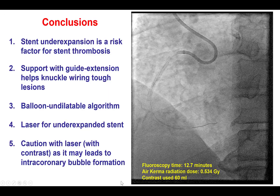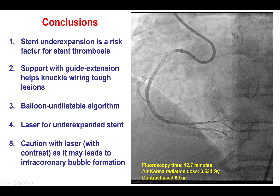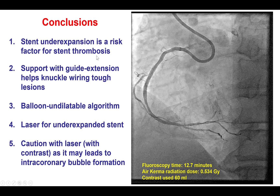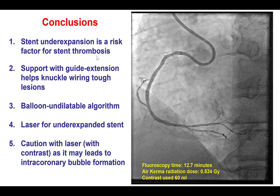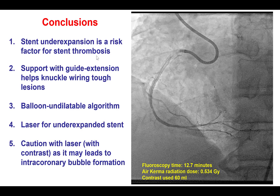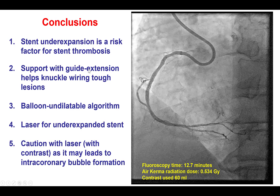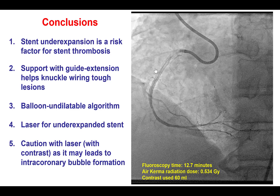Several lessons from this case. First, stent under-expansion is a major risk factor for stent thrombosis and should not be left alone. In patients like this with severe stent under-expansion, consideration should be given to other treatments or, worst case, even coronary bypass surgery given the extremely high risk of stent thrombosis. Another option would be to give aggressive antiplatelet therapy to minimize the risk. Wiring through under-expanded stents is best done using a knuckle wire — this requires extra support, and the guide extension can be useful in obtaining that extra support.